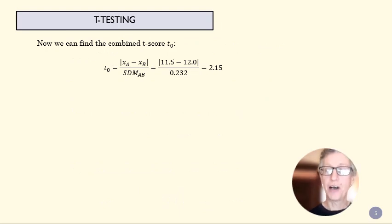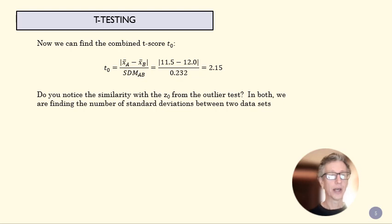Now we can find the T-score that defines the difference between these two data sets. So we find the difference between the two means and we divide by the combined standard deviation of the mean. And that gives us a value of 2.15. So what does that mean? It means these two data sets are 2.15 standard deviations away from each other. Just like we did with our outlier test.